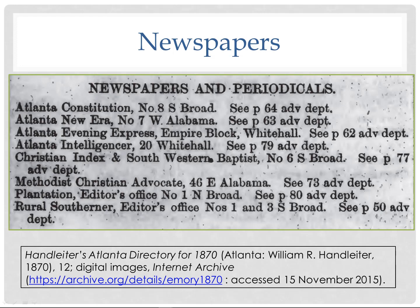Contemporary newspapers are often listed in city directories. Here we have a listing from the 1870 Atlanta directory. The first newspaper listed is the Atlanta Constitution, which survives to the present day. But there are six or seven other newspapers listed — this gives you a list of newspapers to research if you're looking for information from this time period.